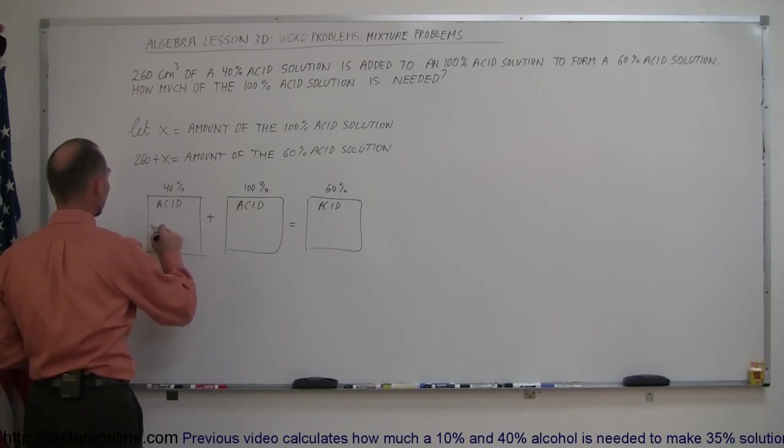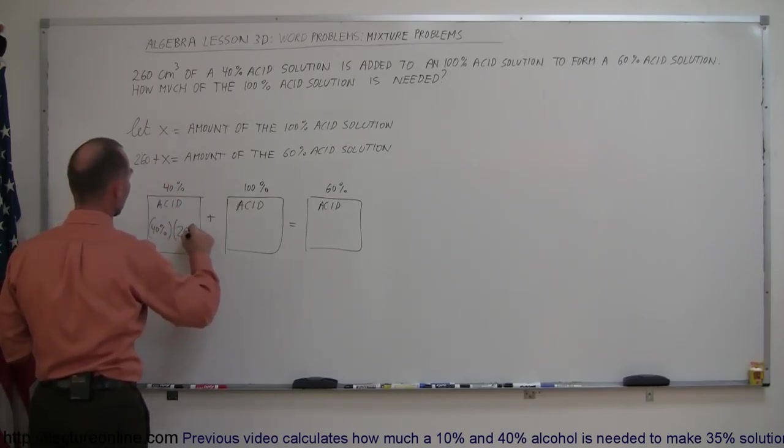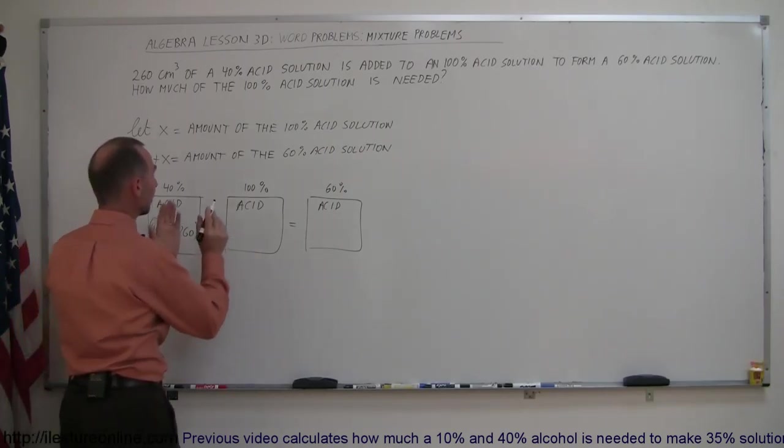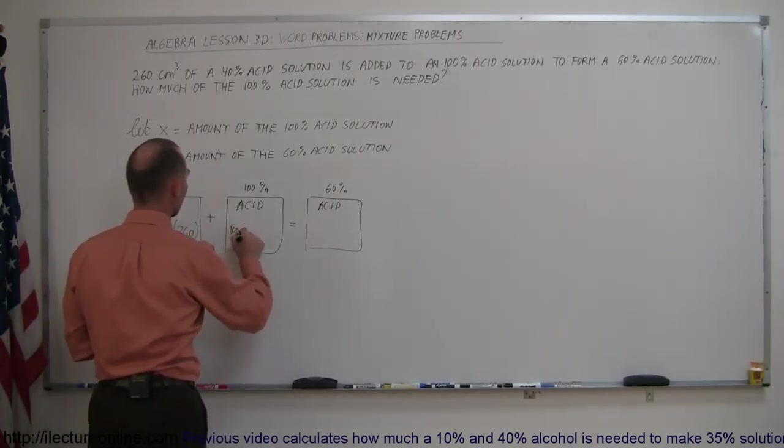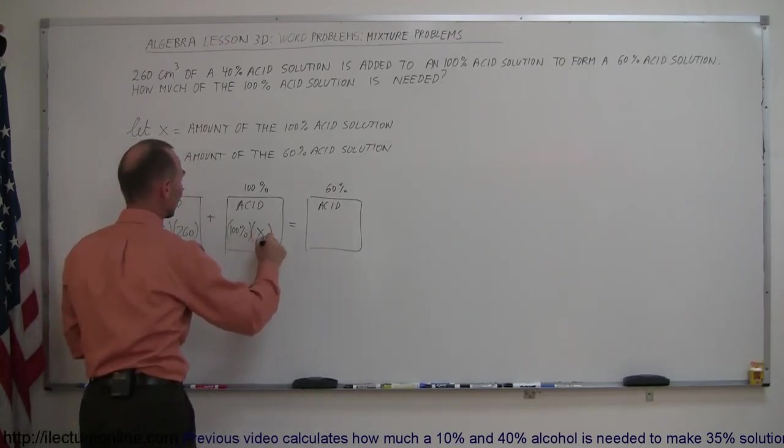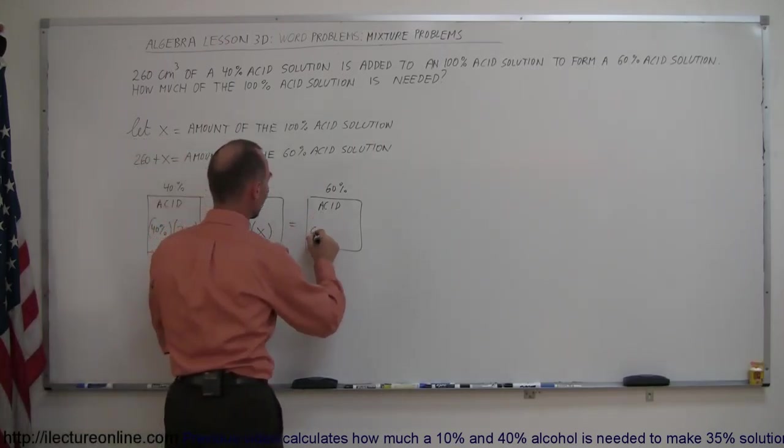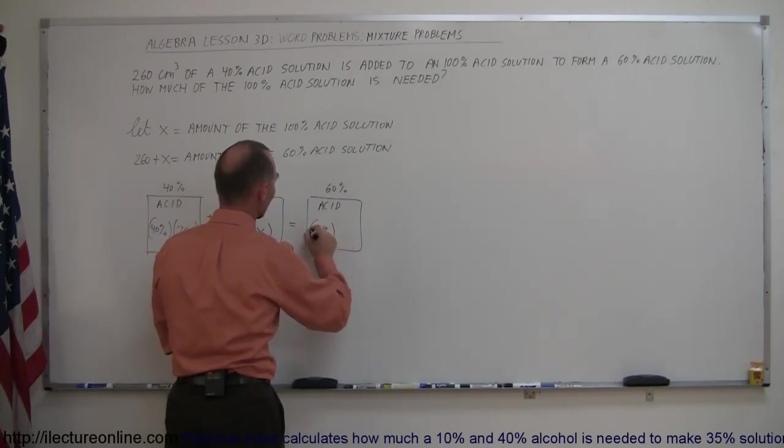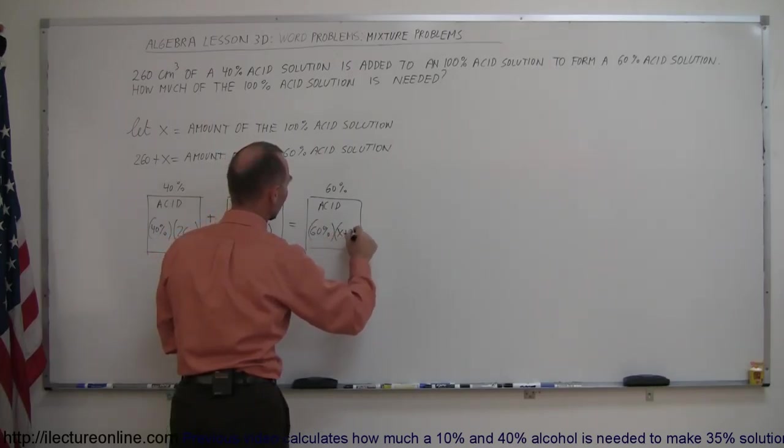So you take the 40% and multiply it times the amount, which is 260 cubic centimeters, and here the concentration 100% times how much acid? We said it was X. This equals the concentration, 60%, times the total amount, which would be X plus 260.